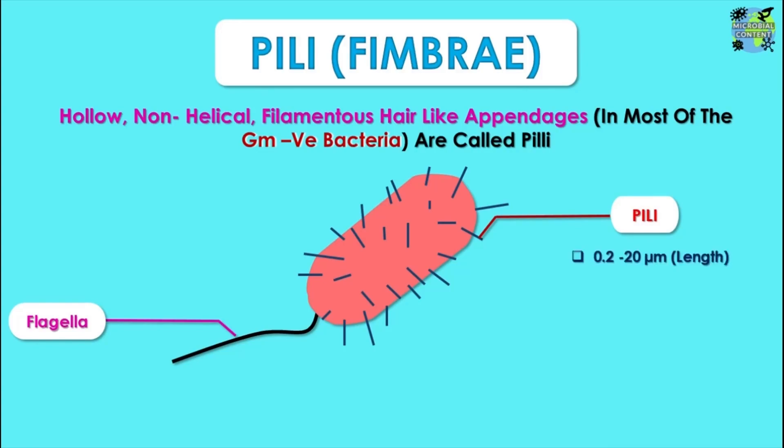The pili are 0.2 to 20 microns in length — that is a wide range. And regarding the width, they are about 30 to 140 angstrom units in width. So there is much more difference between the length and the width; the width is in angstroms, a very small size.